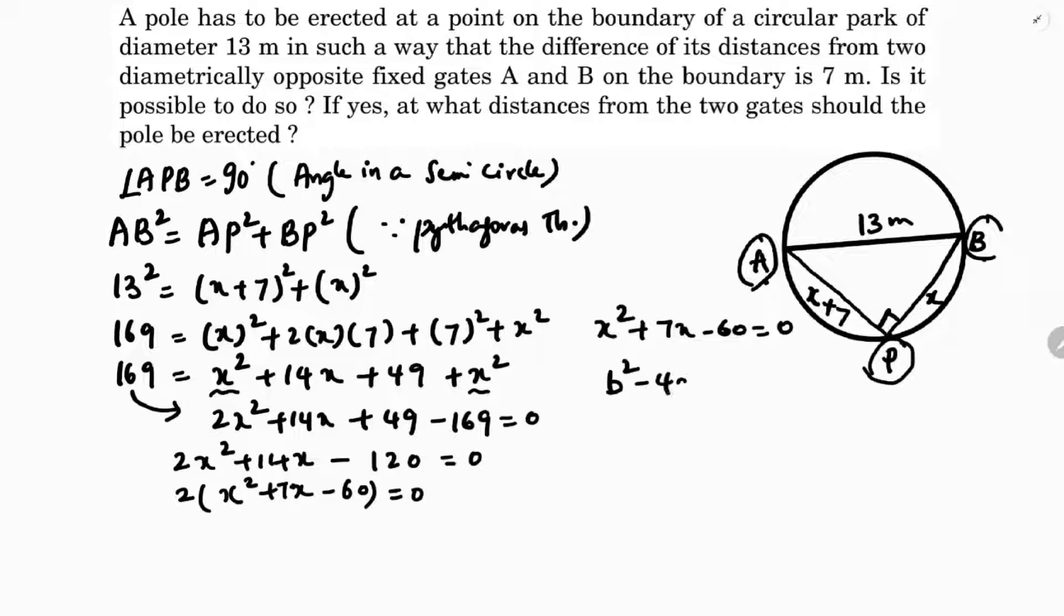B square minus 4AC. Here if you compare with the standard one, A value is 1, B is 7, so 7 square minus 4 into 1 into C value is minus 60. So 49 minus minus, minus plus 240, so 289. It's greater than 0 and it's a perfect square, so it is possible. You'll get rational roots also. It is greater than 0, so you can say real roots, so it will be possible.